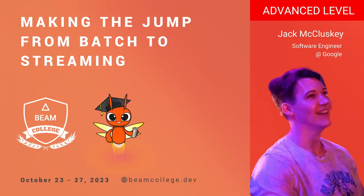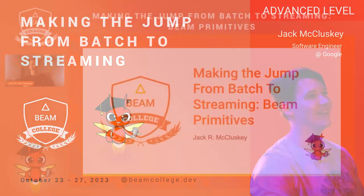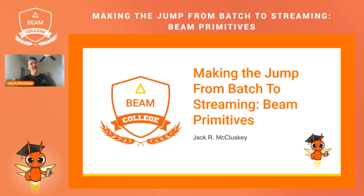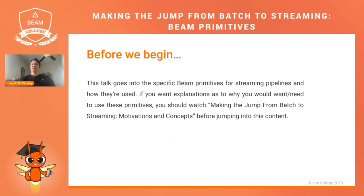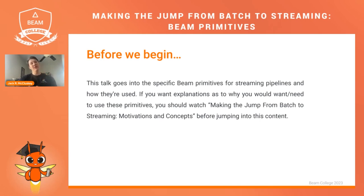Welcome back. This is the second talk in this advanced series: Making the Jump from Batch to Streaming — Beam Primitives. This talk goes into specific Beam primitives for streaming pipelines, how they're used, and how you can configure different settings. If you want explanations as to why you'd need these, watch the first talk in this series, Making the Jump from Batch to Streaming: Motivations and Concepts. If you're already familiar, feel free to stick around, but that talk has very good context.